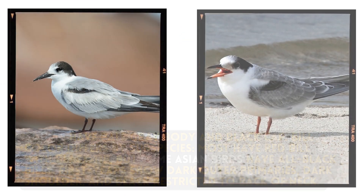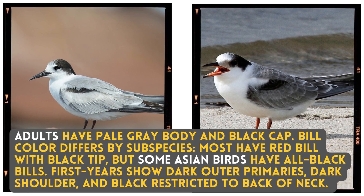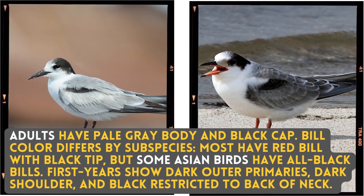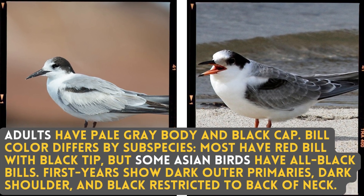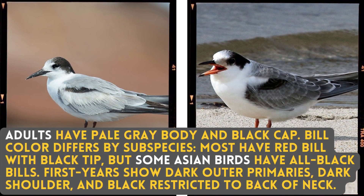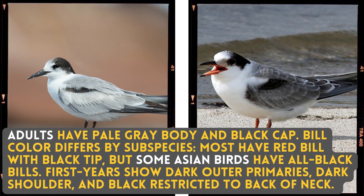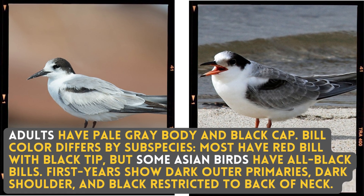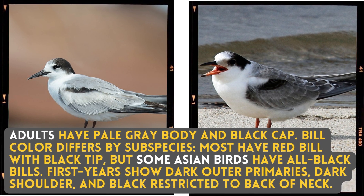Adults have a pale grey body and black cap. Bill colour differs by subspecies — most have a red bill with a black tip, but some Asian birds have all black bills. First-year birds show dark outer primaries, a dark shoulder, and black restricted to the back of the neck.